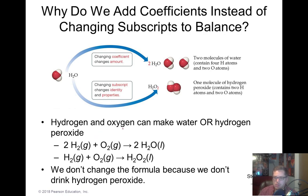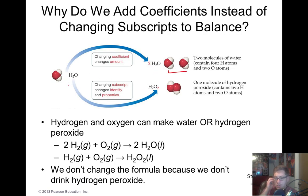This slide helps us understand why we use coefficients instead of subscripts when balancing. For example, with water — if we say we want two water molecules, that's fine. But if you change the subscript and put a two on the oxygen, now instead of water you have hydrogen peroxide, which is a totally different molecule. These two reactions — hydrogen-oxygen forming water versus hydrogen-oxygen forming hydrogen peroxide — are actually totally different things.